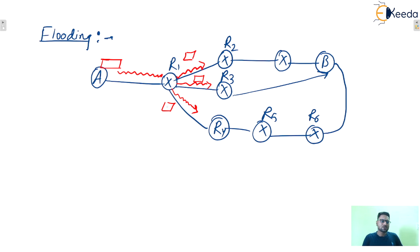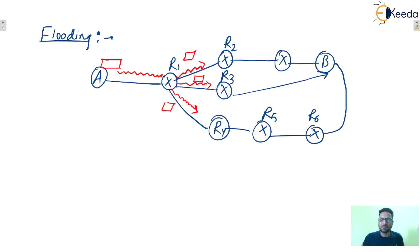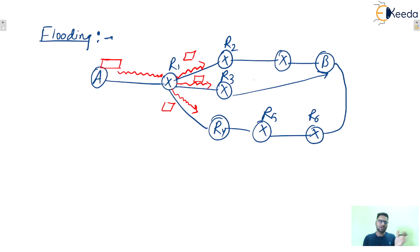So with the help of flooding, various copies will be generated and forwarded everywhere throughout the network. Now let us see the advantages of flooding.